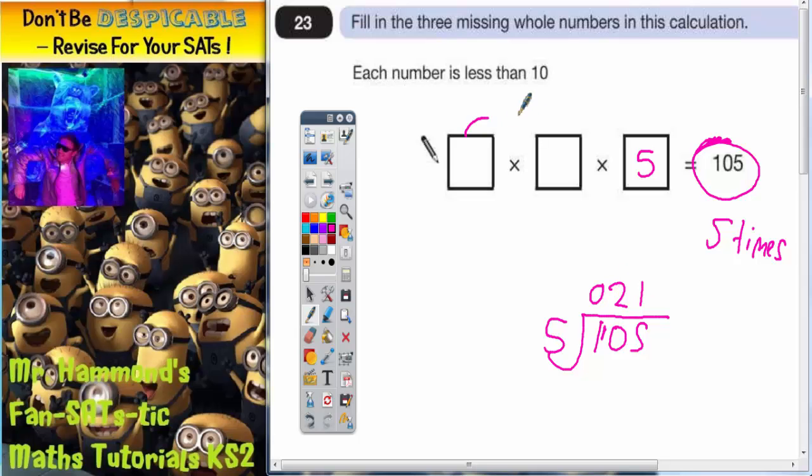So these two numbers must times together to make 21. So can we think of two numbers less than 10 that times together to make 21? Well, you can have 3 times 7, can't you? Because 21 is 3 times 7. So let's try putting that in. So we've got 3 times 7 times 5.